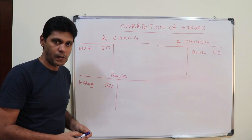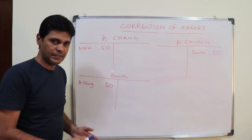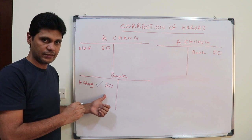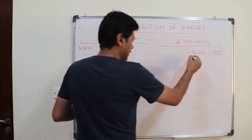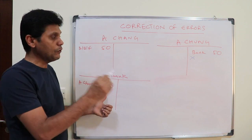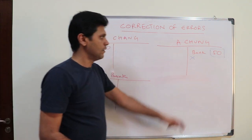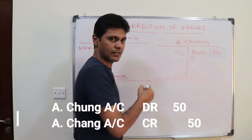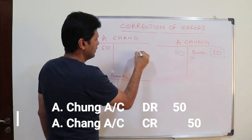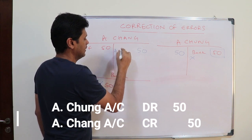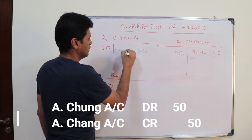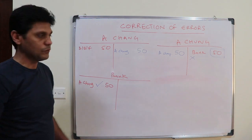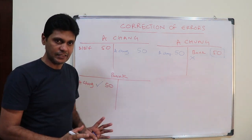So what is the correct entry here? The bank account was debited correctly, whereas the credit entry is wrong. So to rectify this, you should debit A Chang's account and A Chang's account should be credited. So you can say A Chang — this is how you rectify this error.